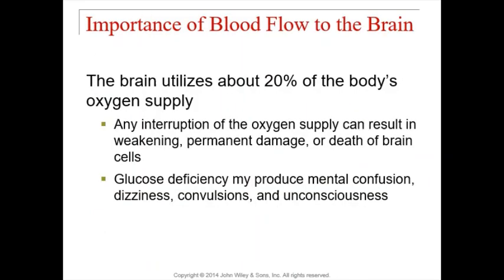The brain is very sensitive and needs lots of oxygen and nutrients. Your brain gets about 20% of your body's oxygen supply. That's a large amount considering the brain's relatively small size, but it's because your brain is constantly working — sometimes doing things for you without you even thinking about it. So it's important for it to constantly receive oxygen and nutrient supplies.